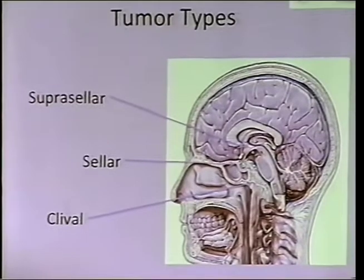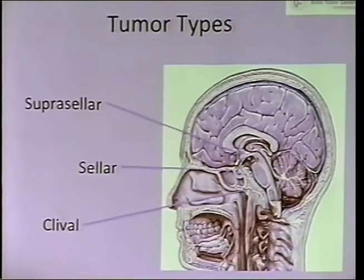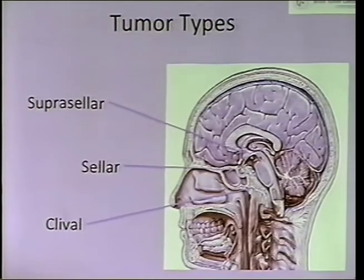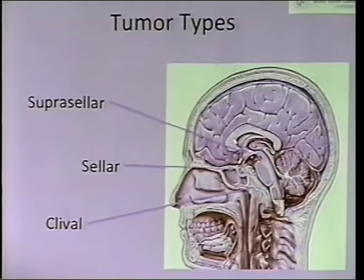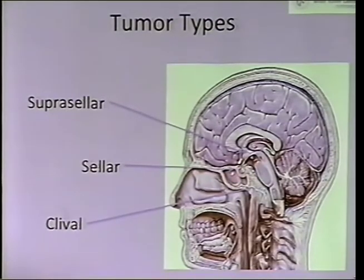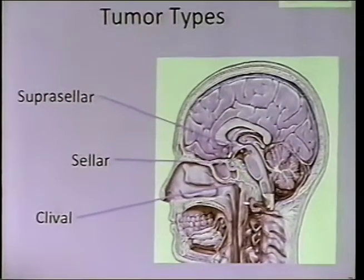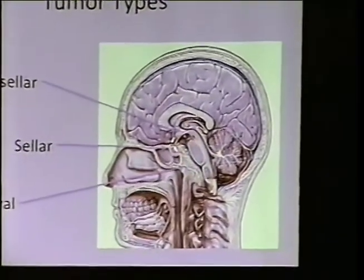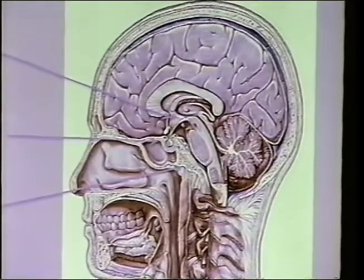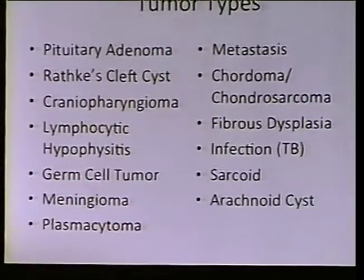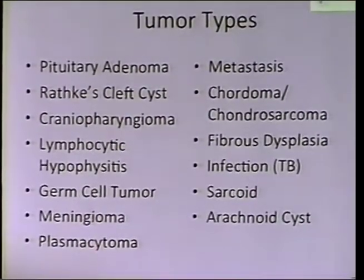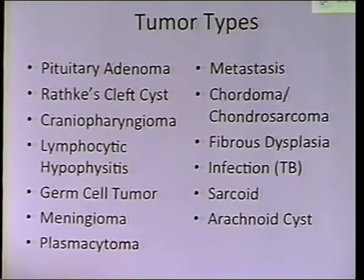What are the different types of tumors we're going to encounter? There are three major areas: the suprasellar region, the sella itself, and the clivus. Each has different pathologies associated with it. Here is a semi-exhaustive list of different things we can find — I'll go over just a few of the most common ones.